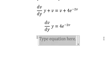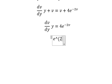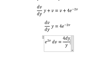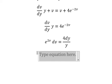So we have e to the power of 2v dv equal to 4 dy over y. Next, we put the integration for both sides.